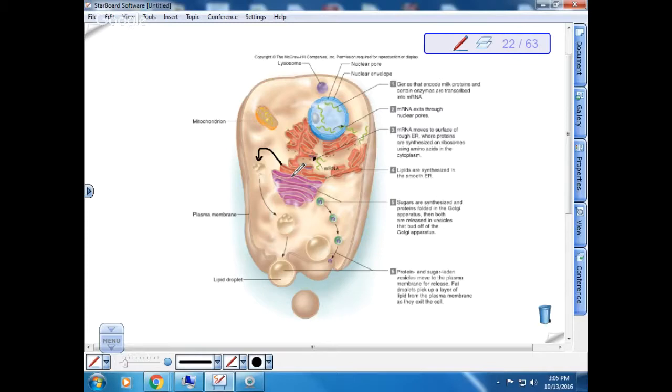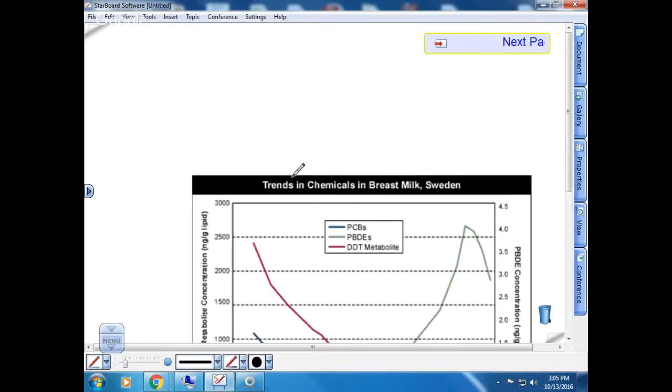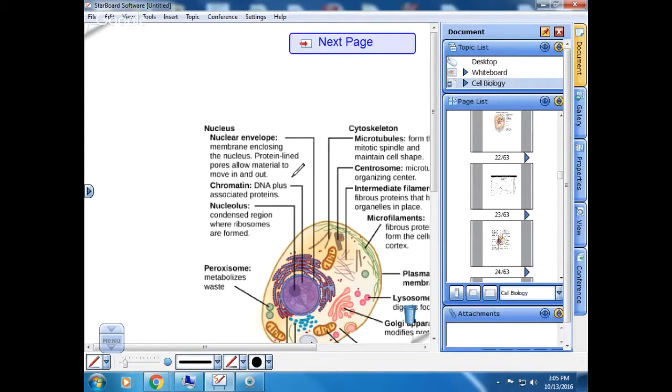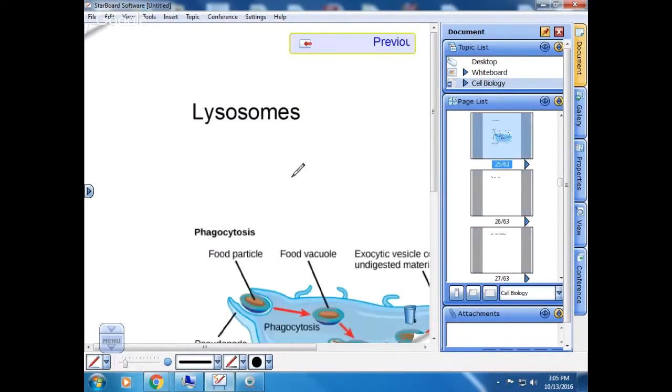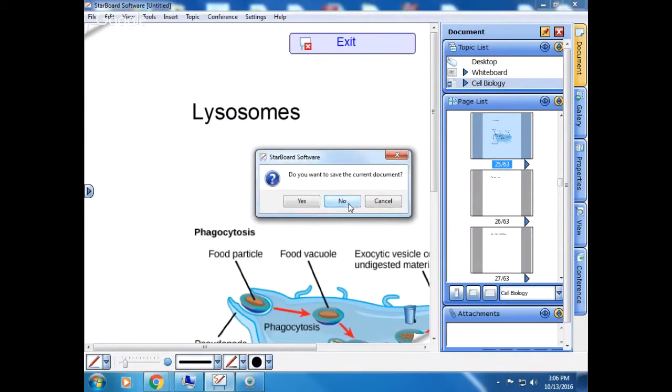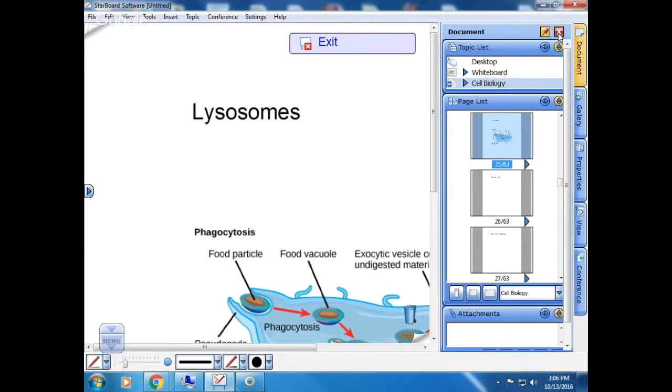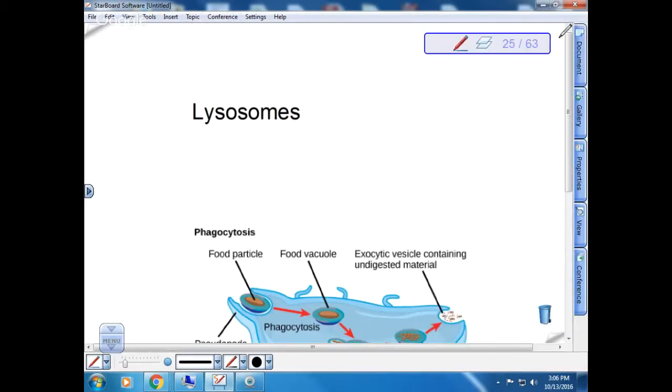So this is a specialized cell that has all the other components of a eukaryotic cell. So we only have two more organelles, and then we'll be done with the organelles.